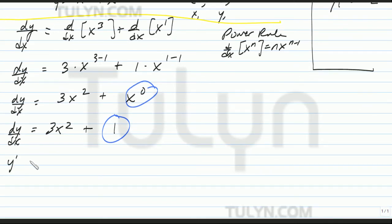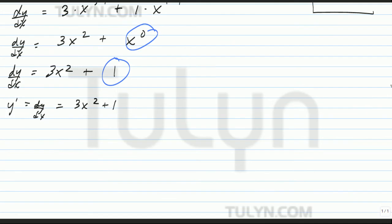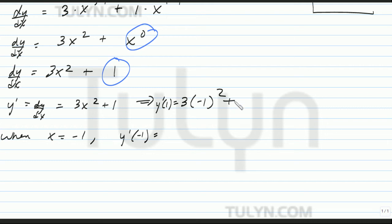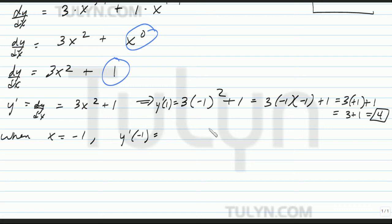So y prime, or dy/dx, equals 3x squared plus 1. If we plug in x equals negative 1, when x equals negative 1, y prime of negative 1 equals 3 times negative 1 squared plus 1. That's 3 times negative 1 times negative 1 plus 1, equals 3 times positive 1 plus 1, equals 3 plus 1, equals 4. So 4 is the slope.